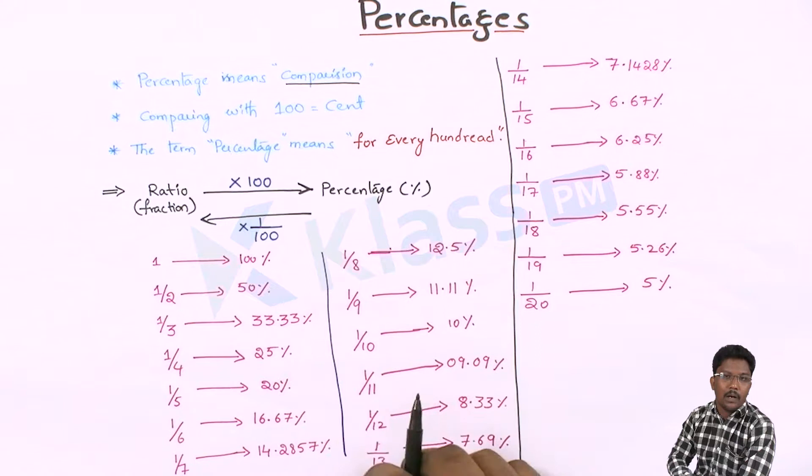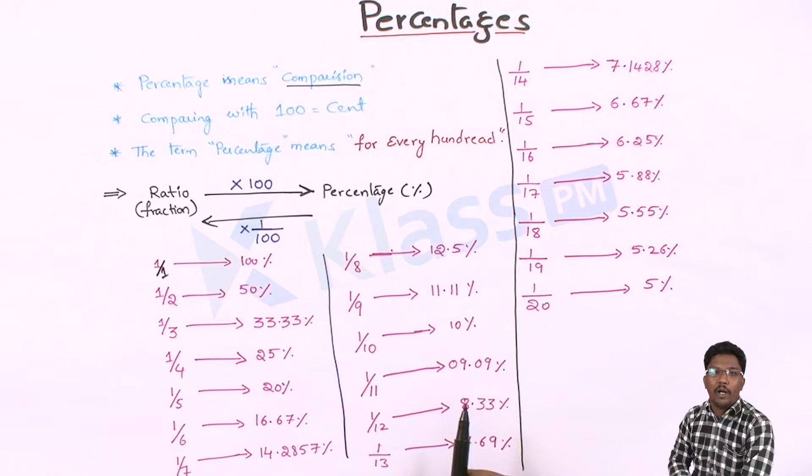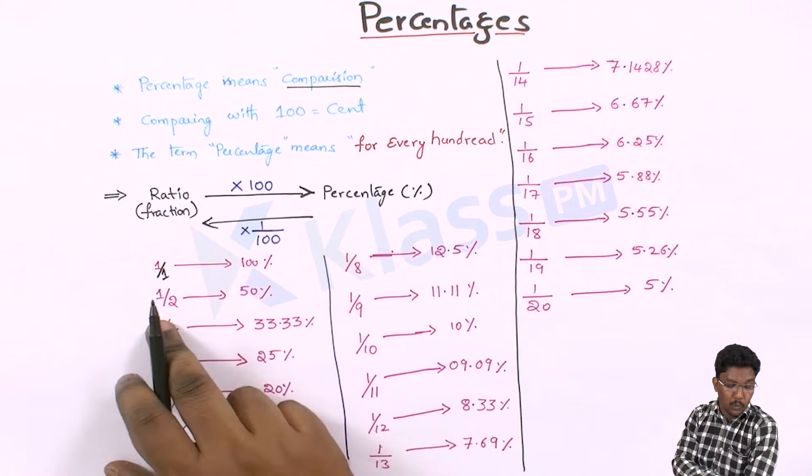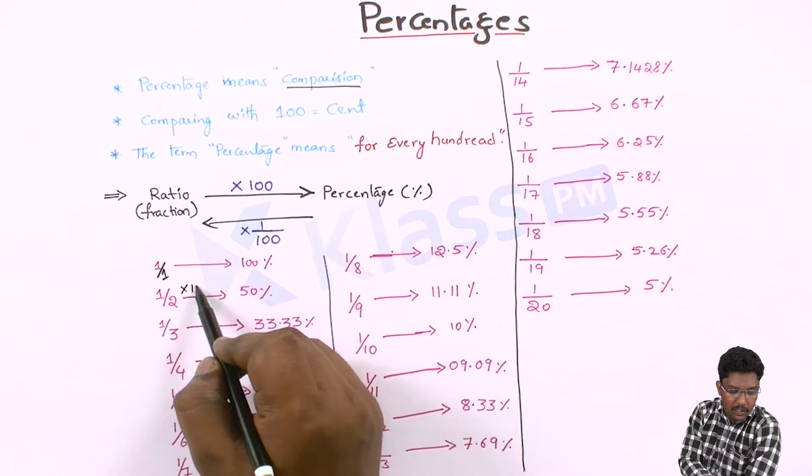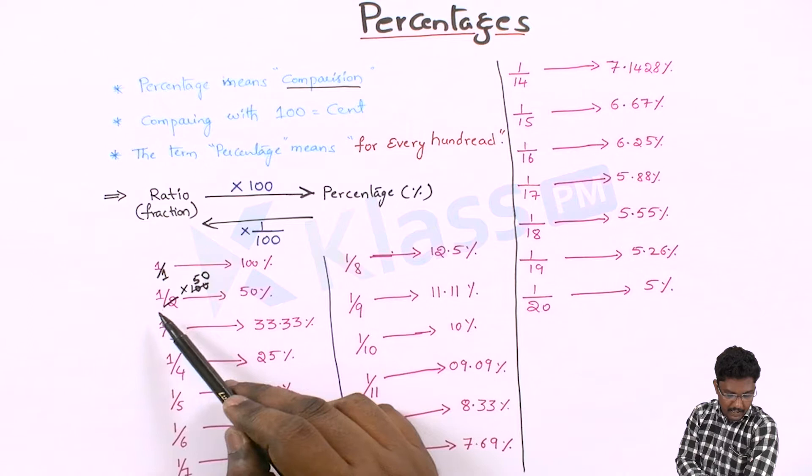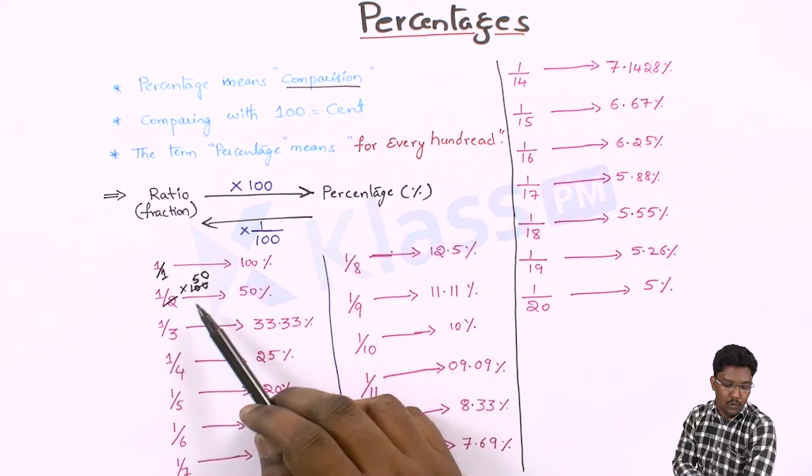1/1 is a fraction equal to 100%. 1/2 is a fraction equal to 50%. We are multiplying by 100 to convert fraction into percentage, so 50 percentage. If you want to convert this into a fraction: 50 divided by 100, remove the percentage symbol, and you get 1/2.